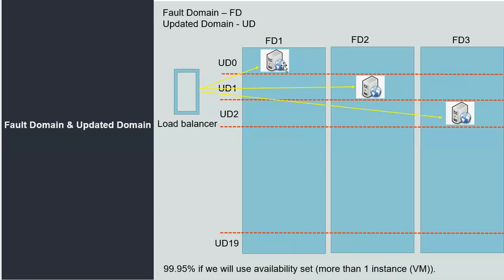If our application is in one fault domain, the same application should also be available in another fault domain and another update domain. A third instance should be available in yet another fault domain and update domain. Microsoft, when applying patches, updates one update domain at a time — going horizontally across all fault domains, one update domain at a time.